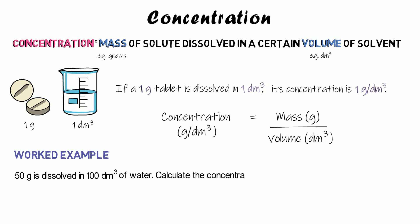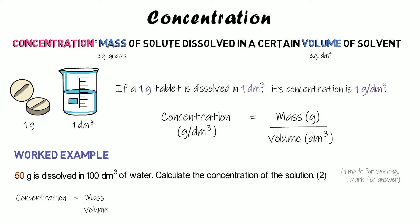Here's an example question: 50 grams is dissolved in 100 decimetres cubed of water — calculate the concentration of the solution. We need our mass and our volume. We'll get one mark for the working out and one mark for the answer. The mass is 50 grams and the volume is 100 decimetres cubed, so we do mass divided by volume: 50 divided by 100.